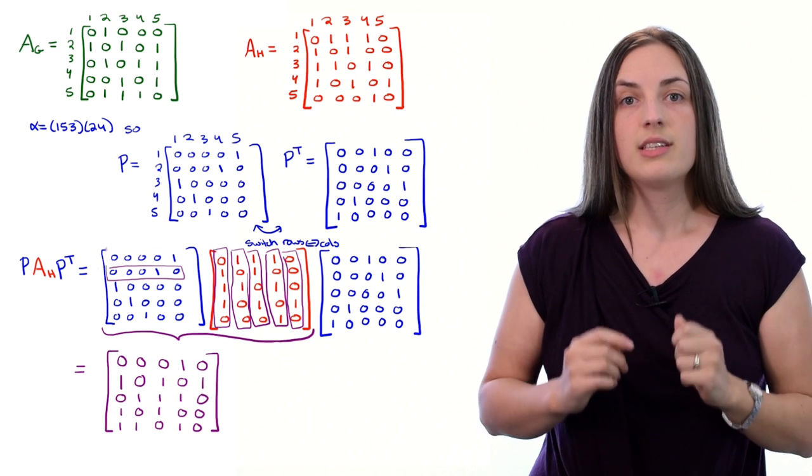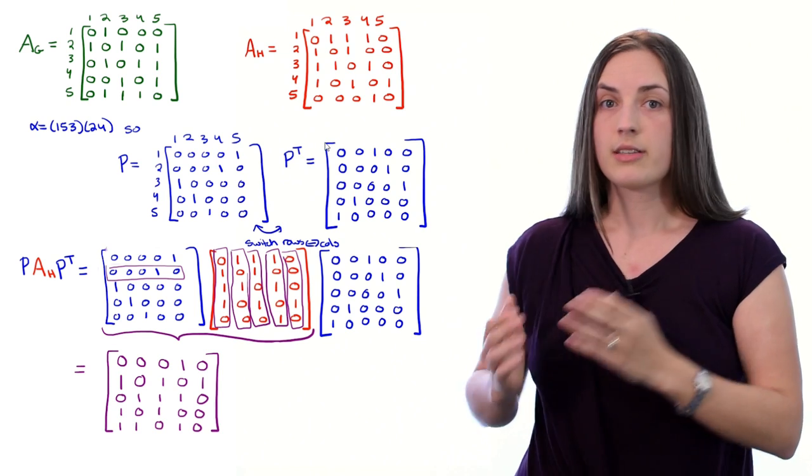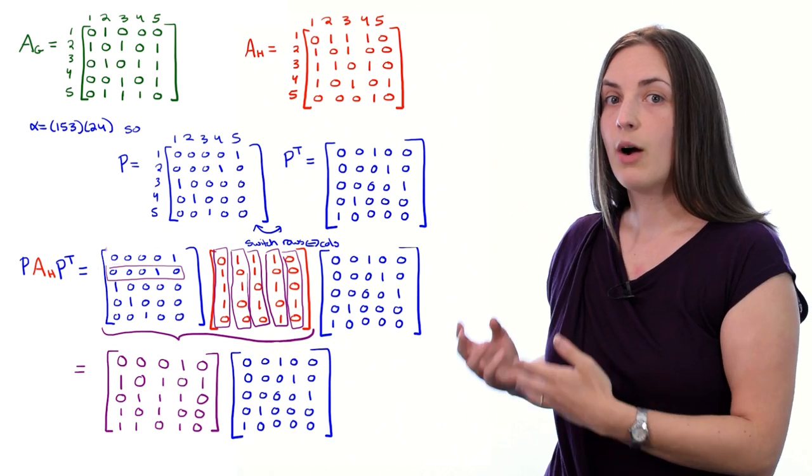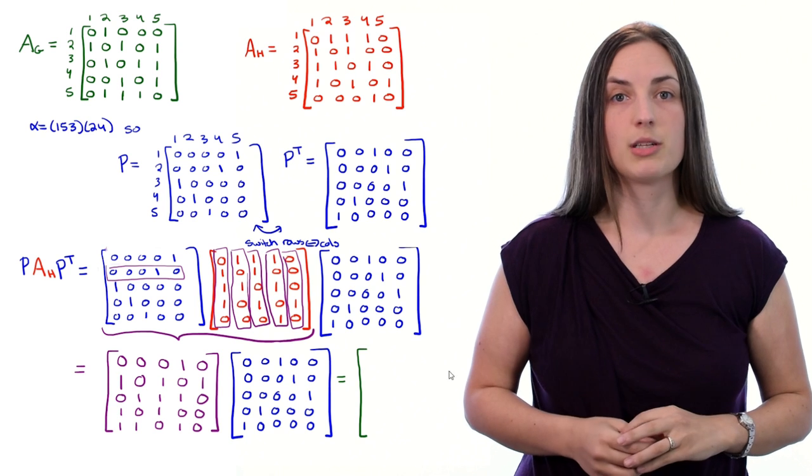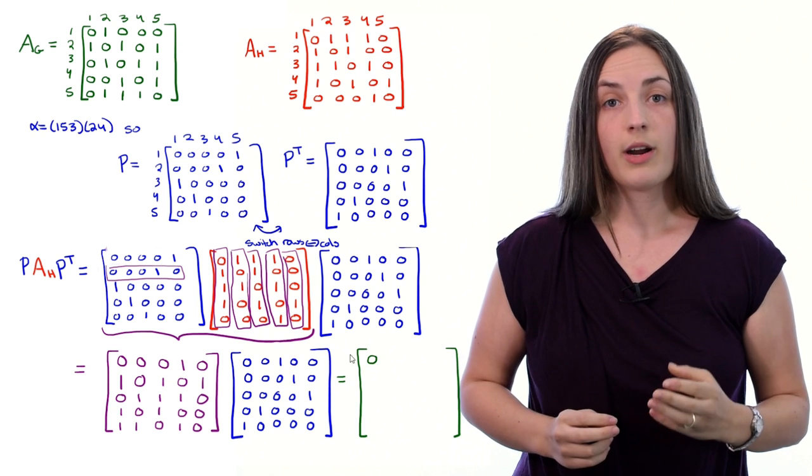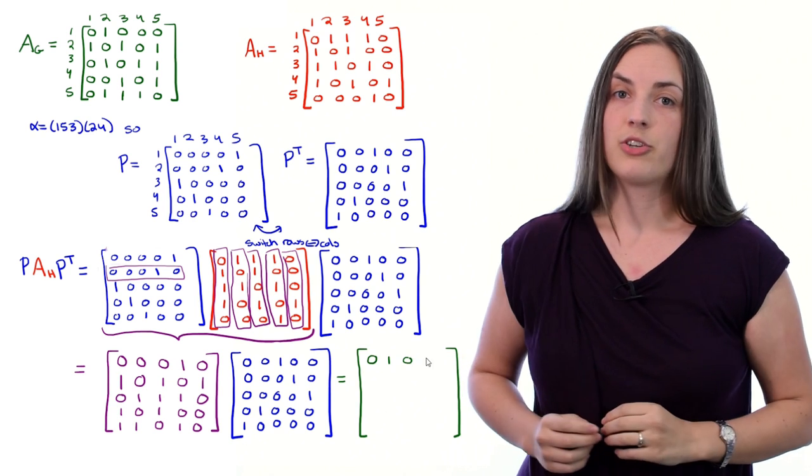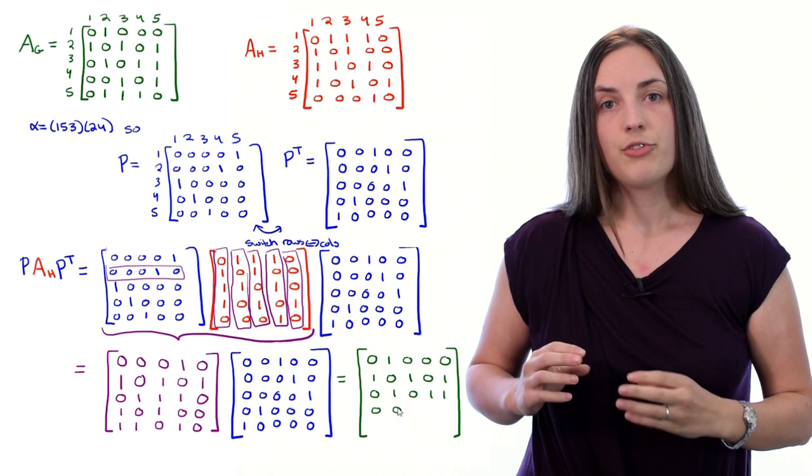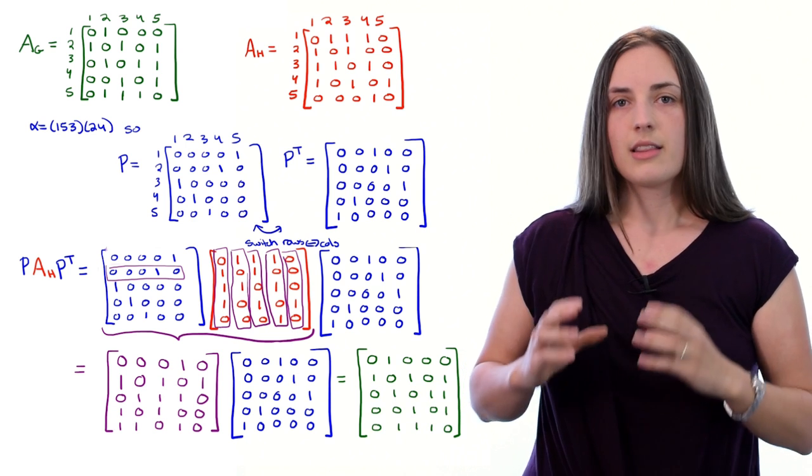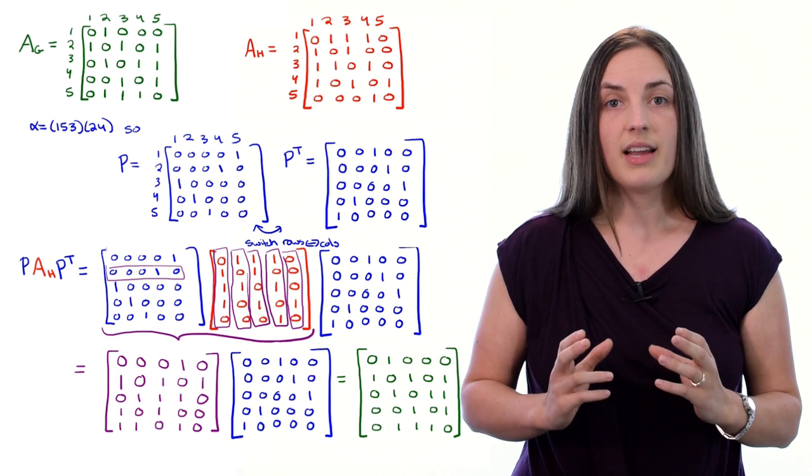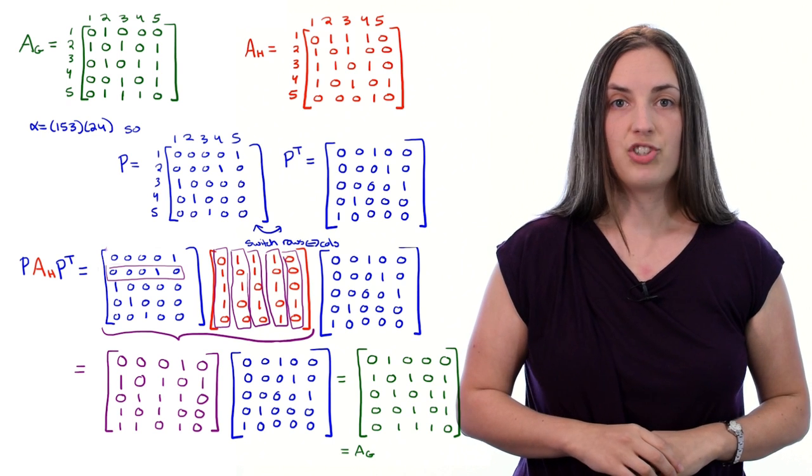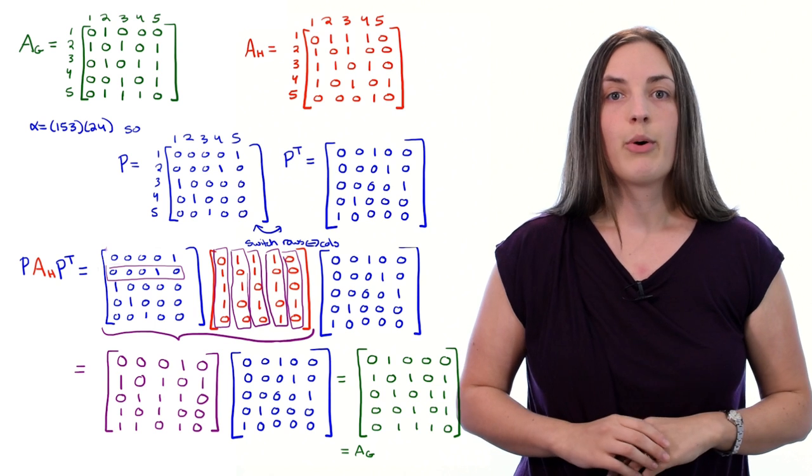We still need to multiply that product by P transpose. So I'll copy P transpose and now we just have to run through all the matrix multiplication again. We work out the product of these two matrices, again using matrix multiplication, and after you finish that you'll notice that the corresponding matrix you get is exactly the adjacency matrix of graph g. So that's precisely what we were looking for. We found a permutation matrix that satisfied the property we were looking for.